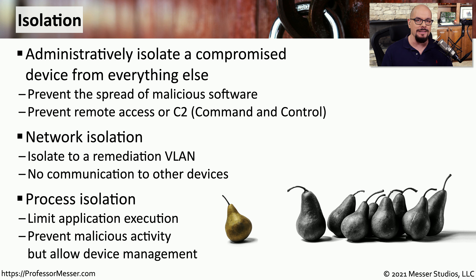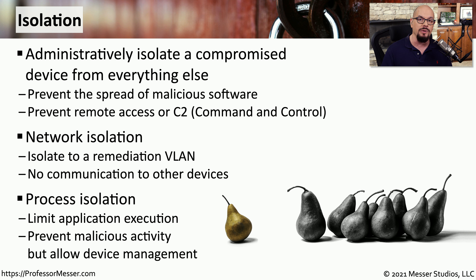We can also implement process isolation. If we identify a process running on a device that seems suspicious, we can disallow any access from that process to the rest of the network. This means the user would still be able to communicate using normal trusted applications, and we would be able to communicate inbound to that device to provide additional support.